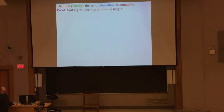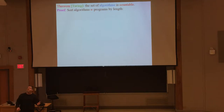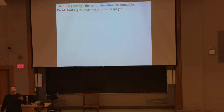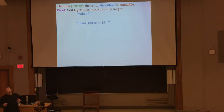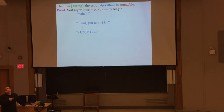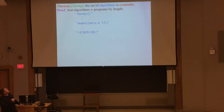Turing showed that the set of algorithms is a countable set — it can be put into one-to-one correspondence with the integers. That's not to be taken for granted, because some sets are not countable — the real numbers cannot be put into one-to-one correspondence with the integers, as we already saw with diagonalization. But algorithms can be sorted by size and within size by lexicographic order, and then numbered 1, 2, 3, 4, 5. The smallest algorithm is just an empty program — in C, you just need main and an open and closed brace.